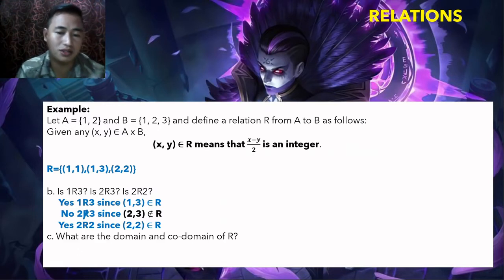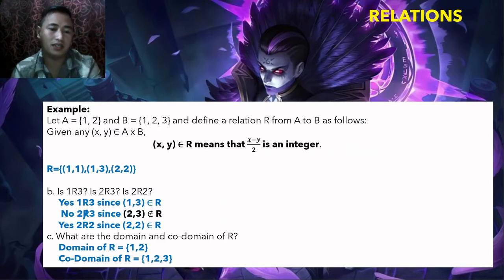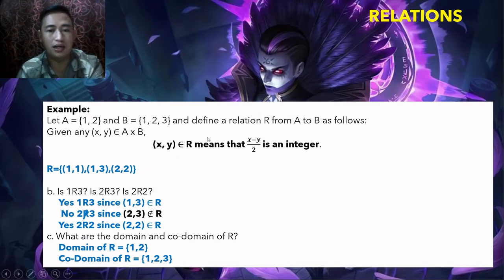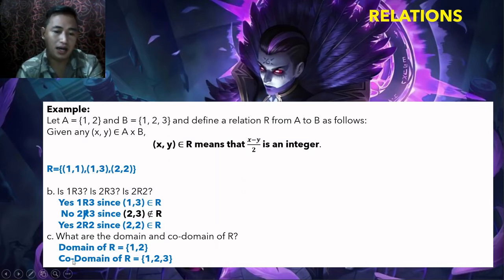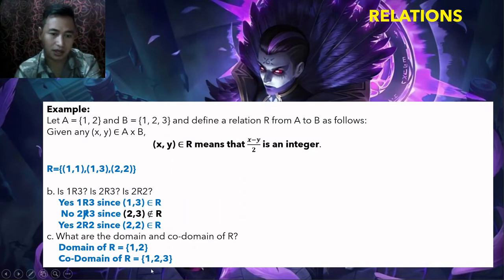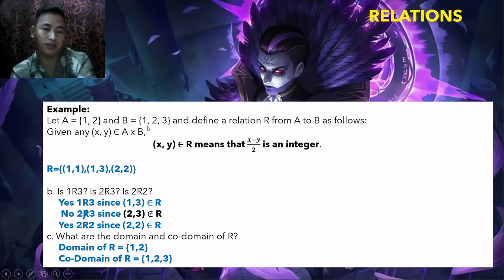What are the domain and codomain of R? The domain of R is {1, 2} — those are the x-values. The codomain of R is {1, 2, 3} — that is the complete set B.